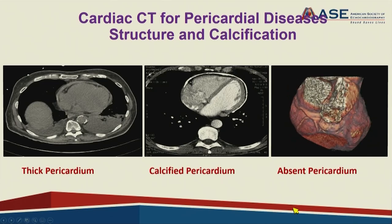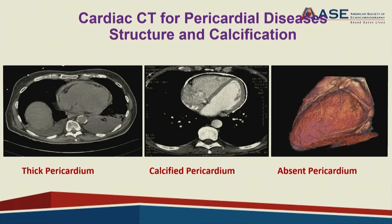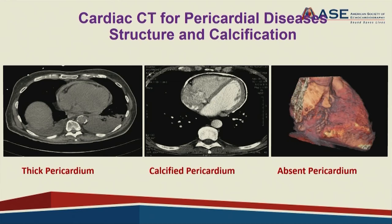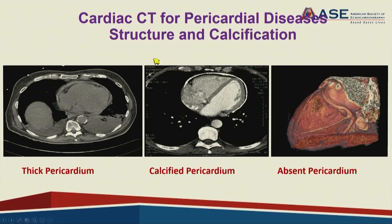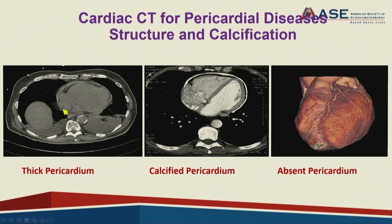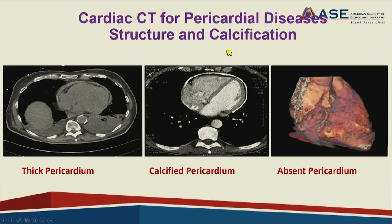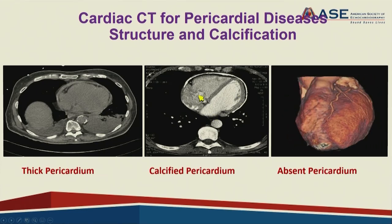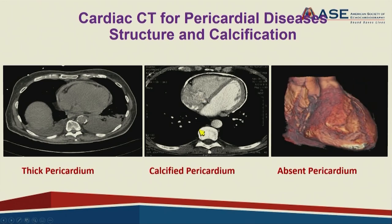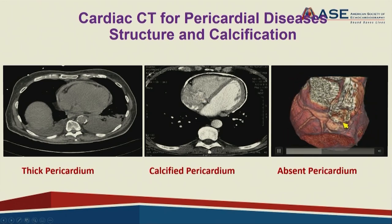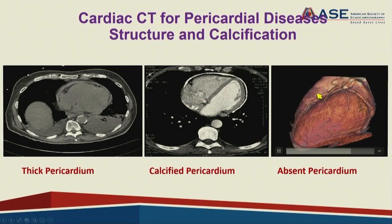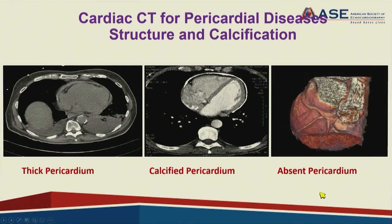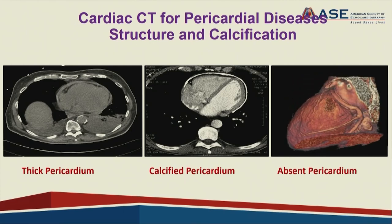Cardiac CT is really fantastic for delineating structure. Here you can see thick pericardium and calcification in patients with constrictive pericarditis. CT can also show absent pericardium in this 3D rendition, which makes it very useful.